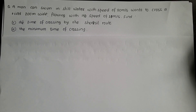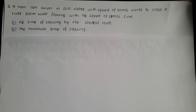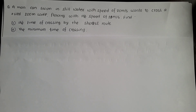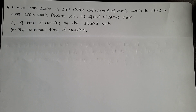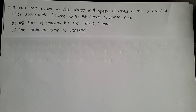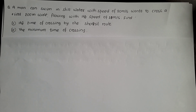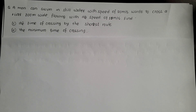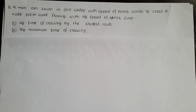Hello students. This question is class 11. A man can swim in still water with the speed of 20 meters per second and wants to cross a river 200 meters wide, flowing with the speed of 10 meters per second. Find the time of crossing by the shortest route and the minimum time of crossing.